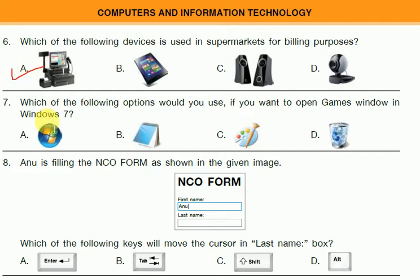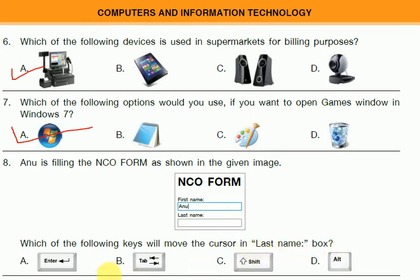Question 7: Which of the following options would you use if you want to open games in Windows 7? The answer is the Start Menu. Question 8: Anu is filling the NCO form as shown in the given image with first name and last name fields. Which key will move the cursor to the last name box? The Tab key is used — answer B.